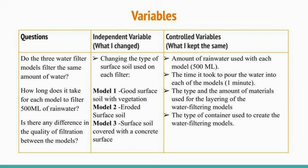My independent variable was changing the type of surface soil used on each filter. My controlled variables were the amount of rainwater used with each model, the time it took to pour the water into each of the models, and the type and amount of container used to create the water filter models.